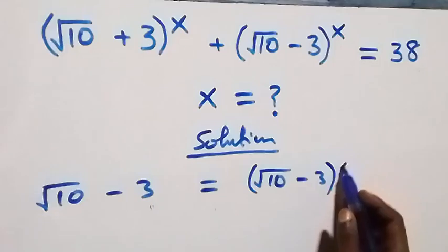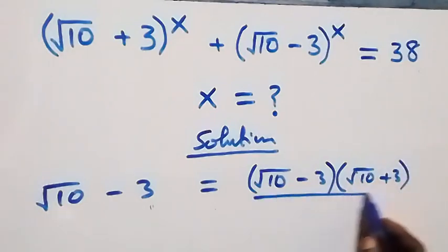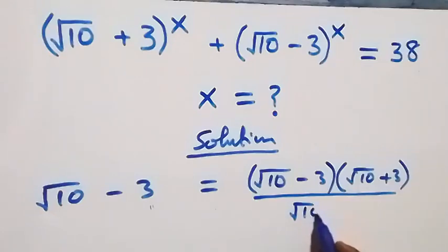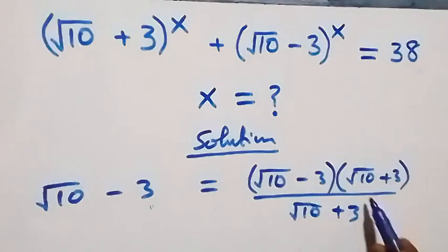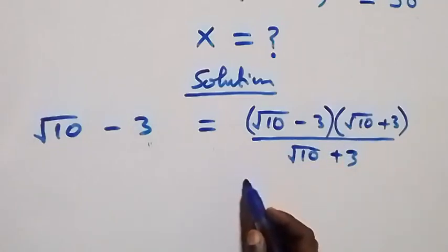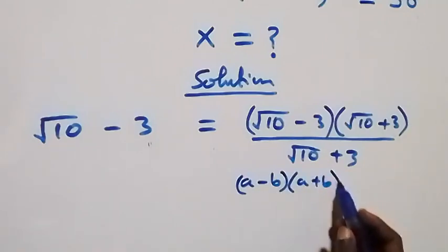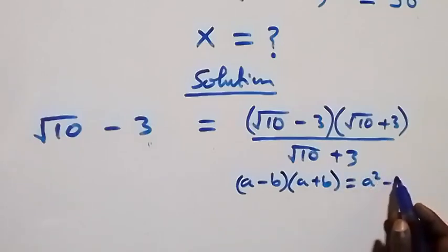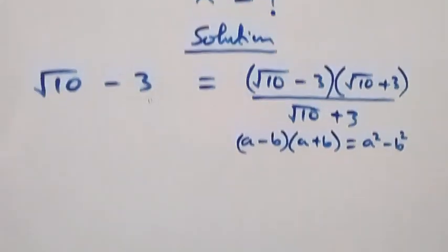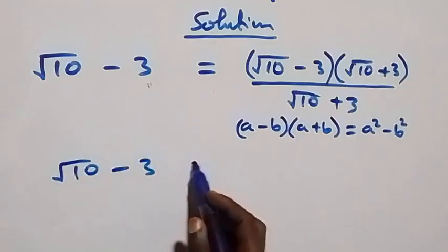We multiply by (√10 + 3) divided by (√10 + 3). When (√10 + 3) cancels, we are left with (√10 - 3). We recall that these are conjugates, and from the identity (a - b)(a + b) equals a squared minus b squared.